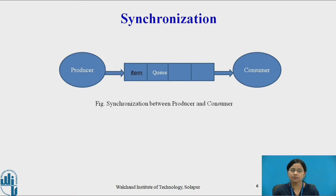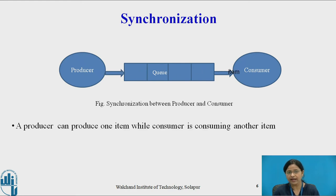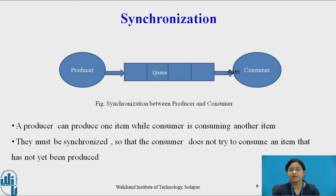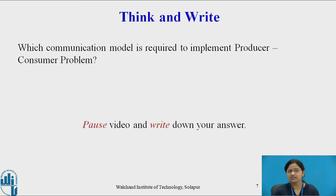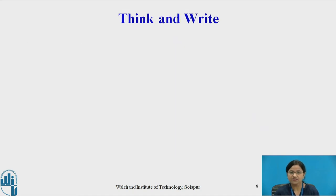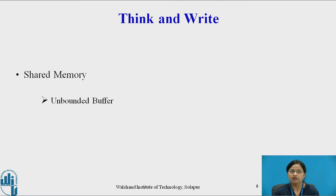Producer and consumer processes must be synchronized. The producer can produce one item while the consumer is consuming another item. They must be synchronized so that the consumer does not try to consume an item that has not yet been produced. Now, pause the video and think about which communication model is required to implement the producer-consumer problem. As we know, there are two communication models — message passing and shared memory — and to implement the producer-consumer problem, shared memory is used. Shared memory is essentially a buffer shared between producer and consumer.